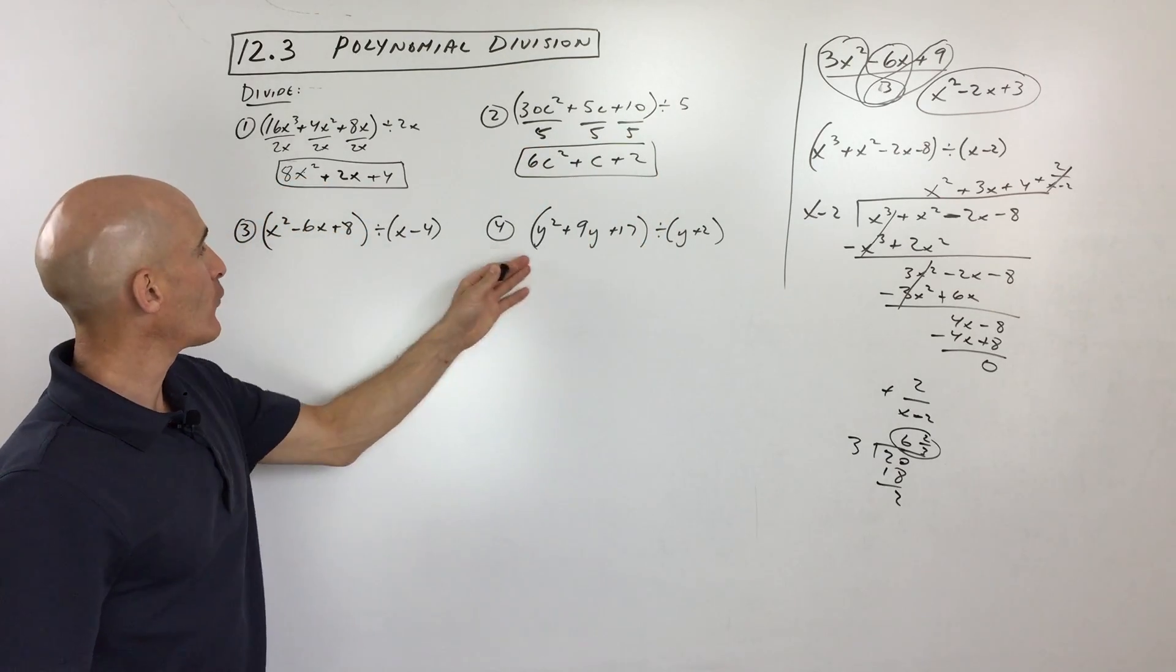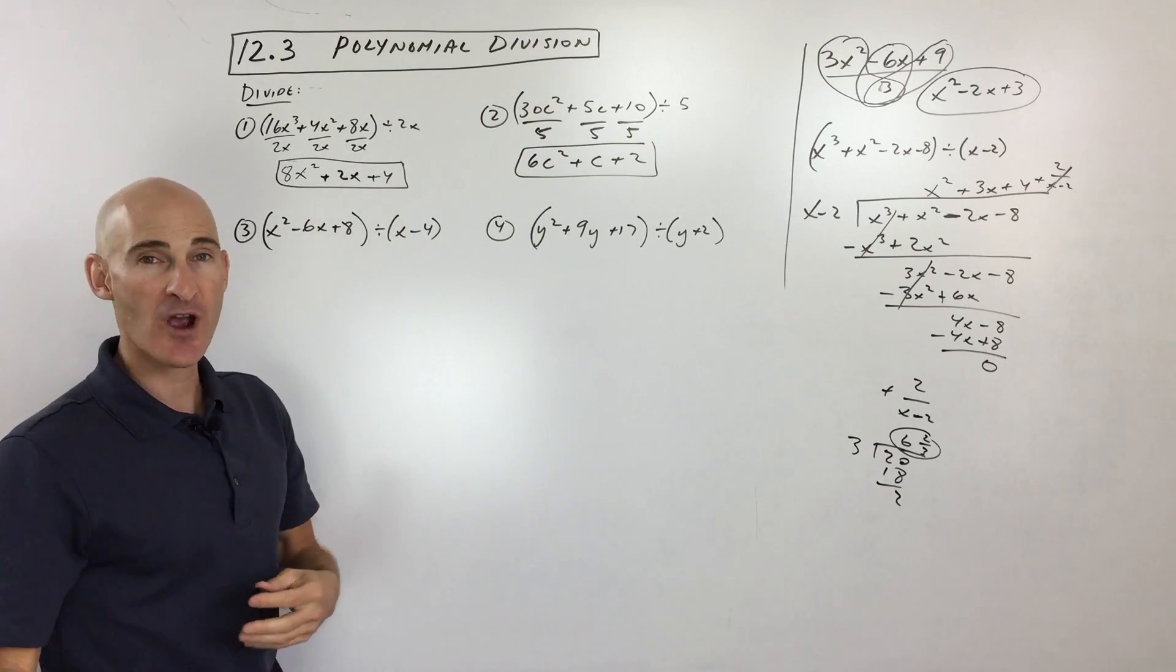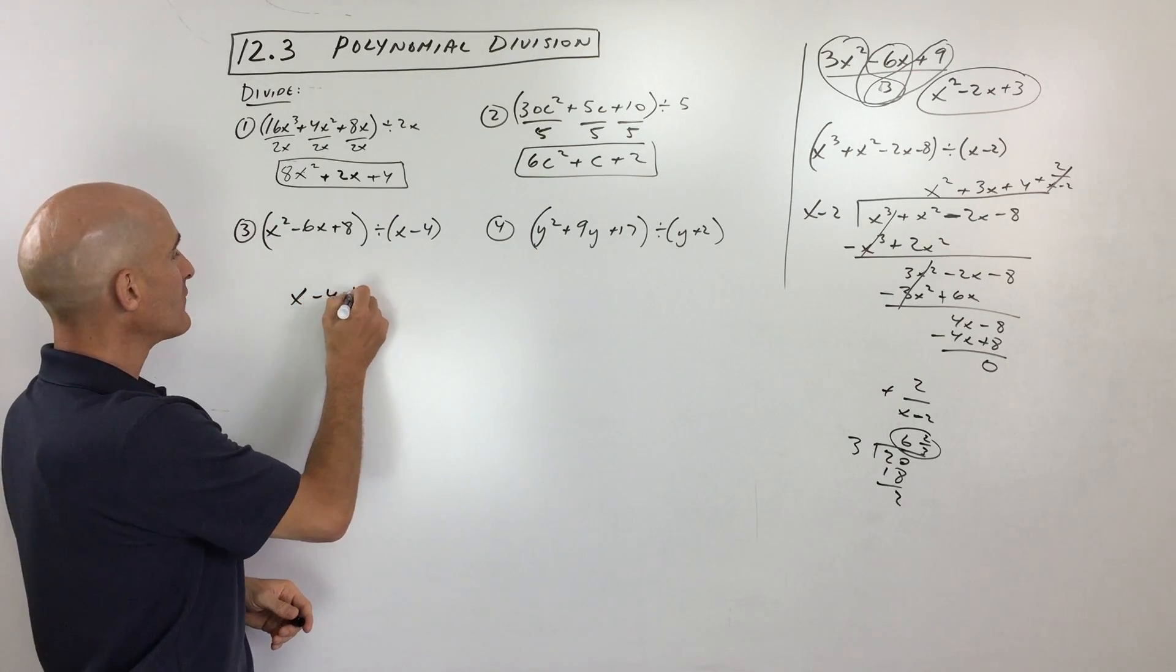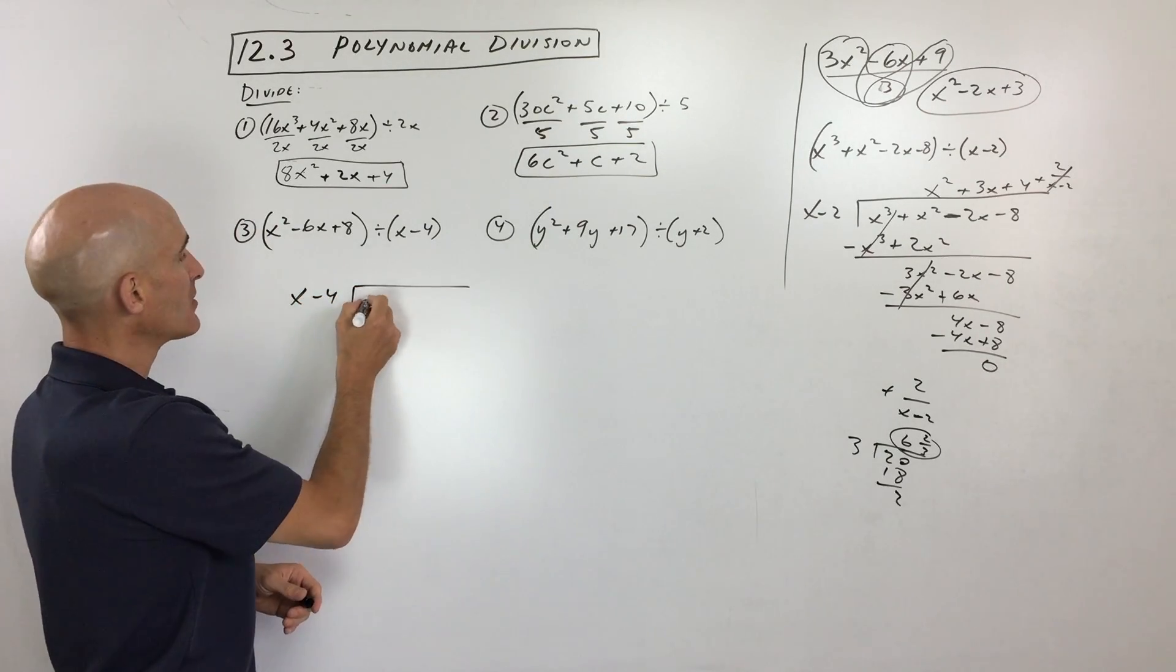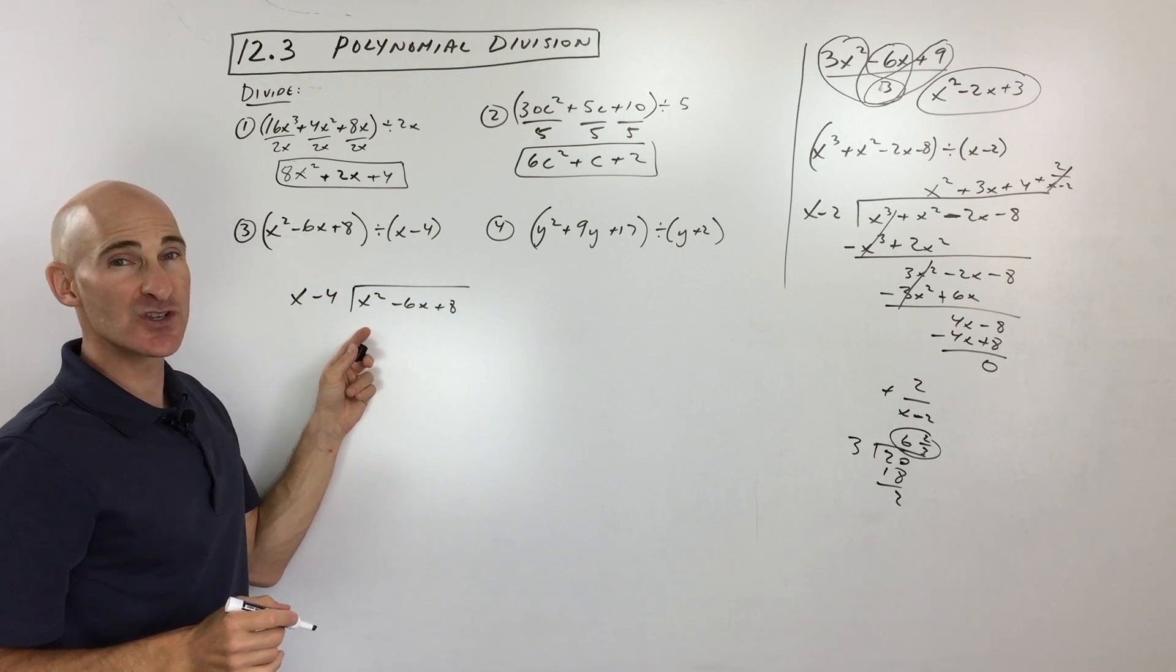Okay, now for 3 and 4, you can see we're dividing by a binomial. Okay, and this works for dividing by trinomials and polynomials with 4 terms. But what we're going to do is we're going to do that long division technique that we were doing over there. So x squared minus 6x plus 8. So see if you can do this one. So what do you think?